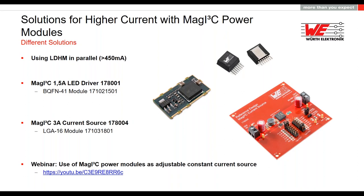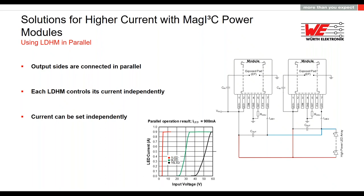The LED driver can be connected in parallel quite easily. You just need to connect the output pins after the output cap — the plus position in red — together and at this point to the LEDs. For the LED minus, connect them together after the output caps and then go to the LEDs. Each LDHM controls its current independently, so you can set both to 450 milliamps to receive 900 milliamps total, or set one to 300 milliamps and one to 400 milliamps for a total of 700 milliamps, as shown in the graph. This is enabled by the internal sense resistor.